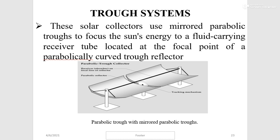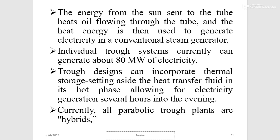Trough systems use mirrored parabolic troughs to focus the sun's energy onto a fluid-carrying receiver tube located at the focal point of a parabolically curved trough reflector. The energy from the sun heats oil flowing through the tube, and that heat energy is then used to generate electricity in a conventional steam generator. Individual trough systems can currently generate about 80 megawatts of electricity. Trough designs can incorporate thermal storage — setting aside the heat transfer fluid in its hot phase — allowing for electricity generation several hours into the evening.